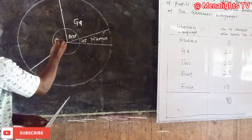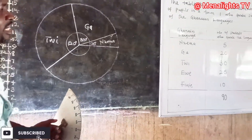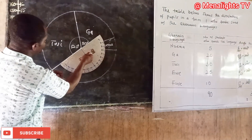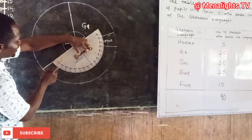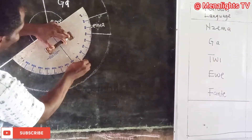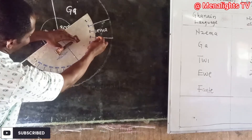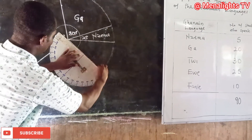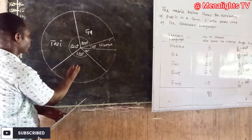Next is Ewe with an angle of 100 degrees and the last one, Fanti, is 40 degrees. For Ewe: place the baseline on the line, center line at the center, and count 0, 10, 20, 30, 40, 50, 60, 70, 80, 90, 100. Mark it and draw the line. The remaining section of 40 degrees represents Fanti.